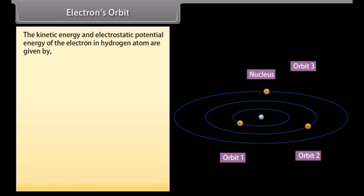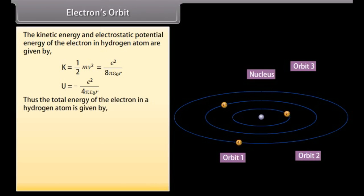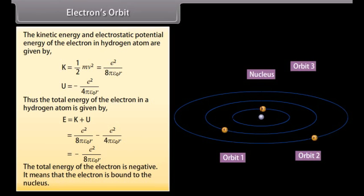The kinetic energy and electrostatic potential energy of the electron in hydrogen atom are given by K equals 1 upon 2 Mv square which equals E square upon 8 pi epsilon not R and U is equal to minus E square upon 4 pi epsilon not R. Thus the total energy of the electron in a hydrogen atom is given by E as K plus U which is equal to minus E square upon 8 pi epsilon not R. The total energy of the electron is negative. It means that the electron is bound to the nucleus.